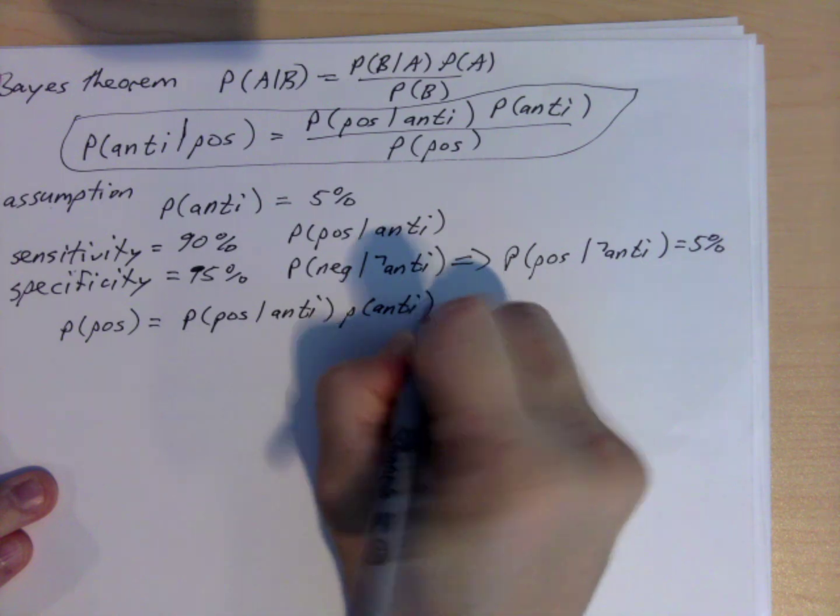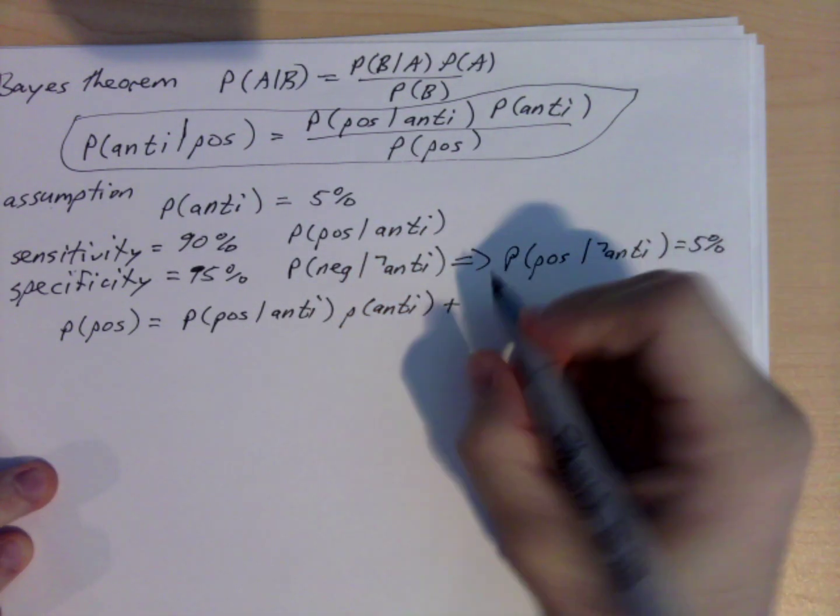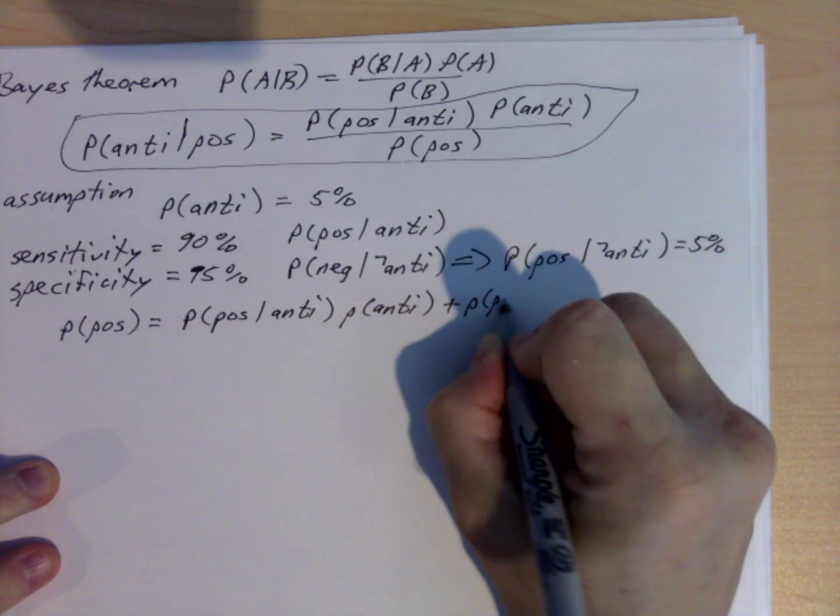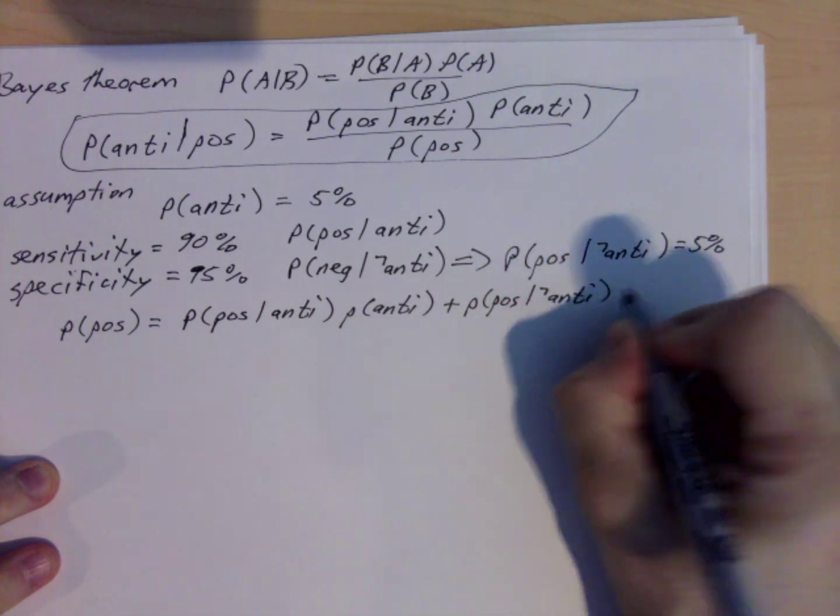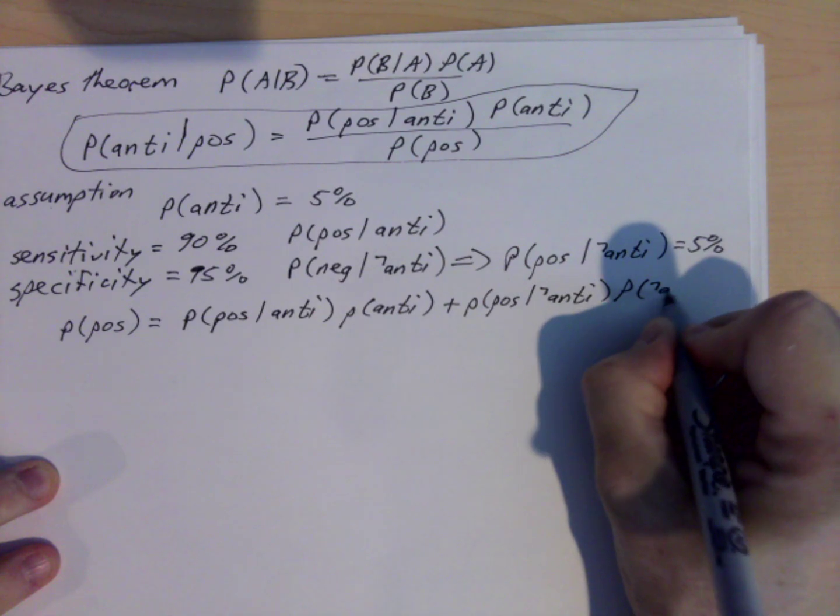Plus the probability that you test positive given that you don't have antibodies times the probability that you don't have antibodies.